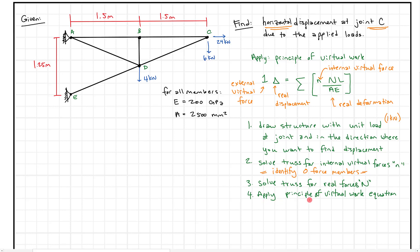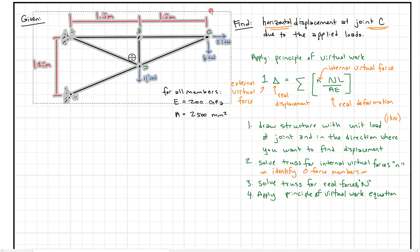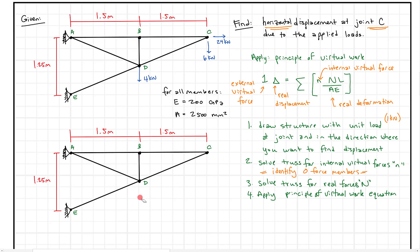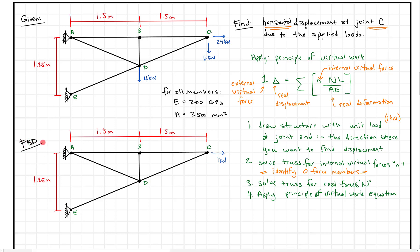After that, we're going to apply the principle of virtual work equation. So first, let's copy this structure down. We're going to delete all the forces and replace them with our unit force. We'll delete every single force on that structure and put back only a one unit load where we want the displacement. Since we want the displacement at joint C, we put a one kilonewton force at joint C in the horizontal direction, since we want the horizontal displacement.